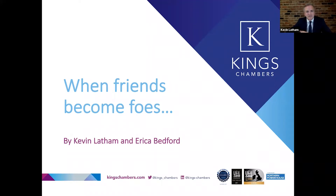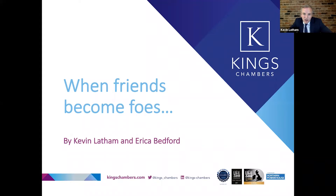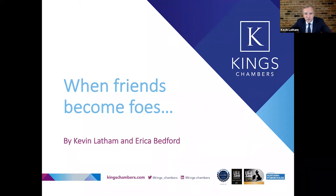This afternoon's seminar will start with a brief review of the facts of Belzner, the arguments run in that case, and the conclusions of Mr Justice Lavender on the first appeal. As permission to appeal has already been granted by the Court of Appeal, we'll look at the strength of the competing arguments and how they might be resolved, and ultimately what can and should be done by solicitors in the meantime. We'll leave time for questions at the end — there is a Q&A tab at the bottom of your screen.